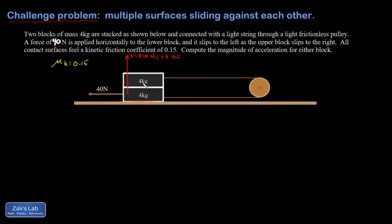Okay, the normal force exerted upward on the top block has to be sufficient to support the weight of 4 kilograms. So n equals 4 times 9.8 and that's going to give me 39.2 newtons.